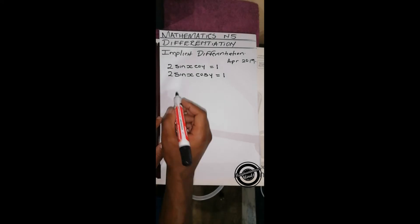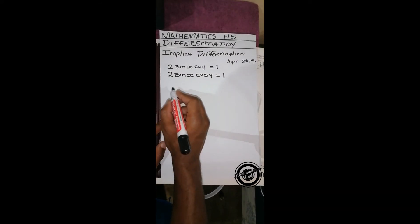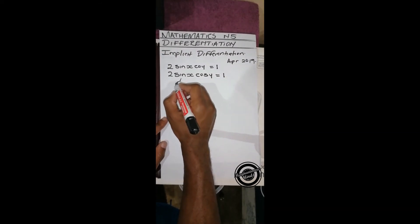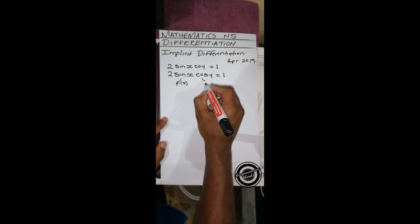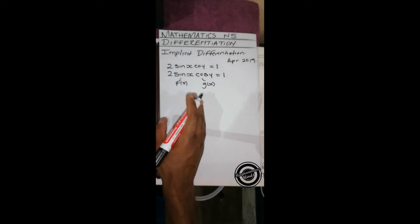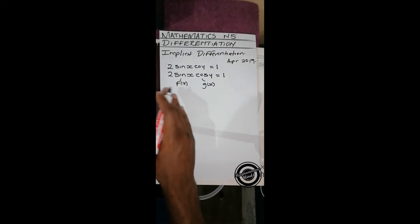equation. We'll differentiate this using product rule. This will be our f(x), this will be our g(x). Product rule is you differentiate f(x) first, plus, then